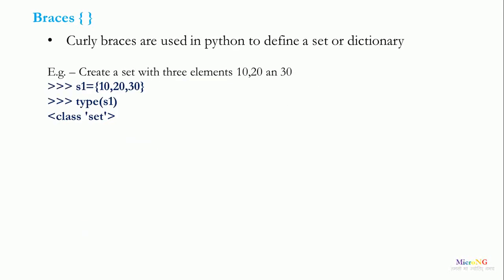Curly braces are used in Python to define a set or dictionary. For example, to create a set with elements 10, 20, and 30, we use curly braces: S1 equals curly braces 10, 20, and 30. Since we have used curly braces, S1 will become a set. Using type of S1, it displays as the class set.